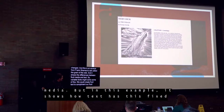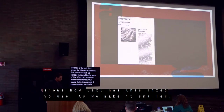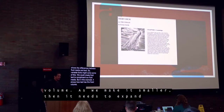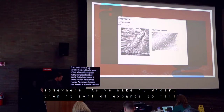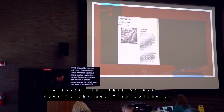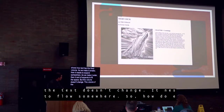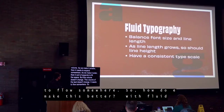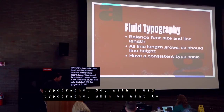Text has a fixed volume. As we make it smaller, it needs to expand somewhere. As we make it wider, it expands to fill the space — but this volume doesn't change; it needs to flow somewhere. So how do we make this better? With fluid typography. With fluid typography, we want to balance the font size and line length. As line length grows, so should line height. And we want to have a consistent type scale or type hierarchy.